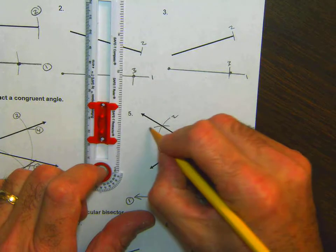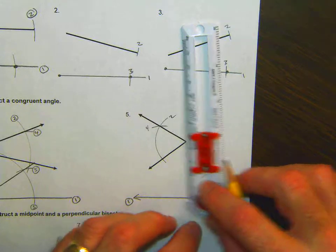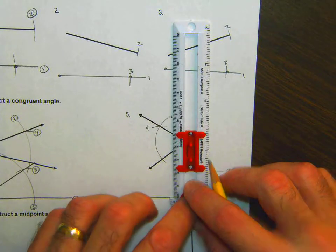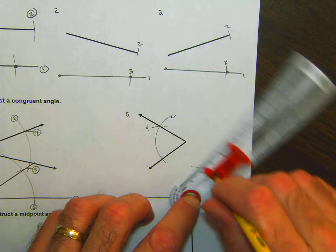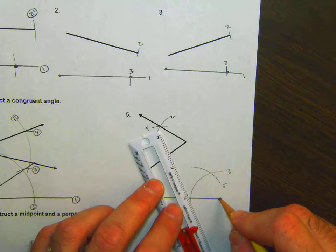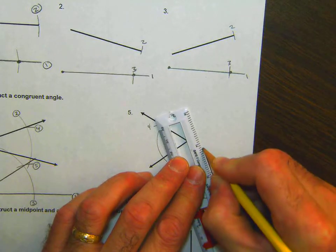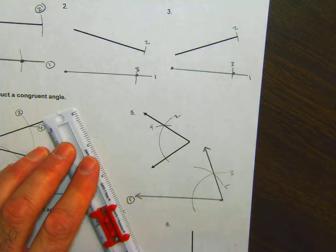So that's my fourth. Copy that same length across here. That's my fifth. Now I'm going to go from that endpoint out to the intersection. And I have it.